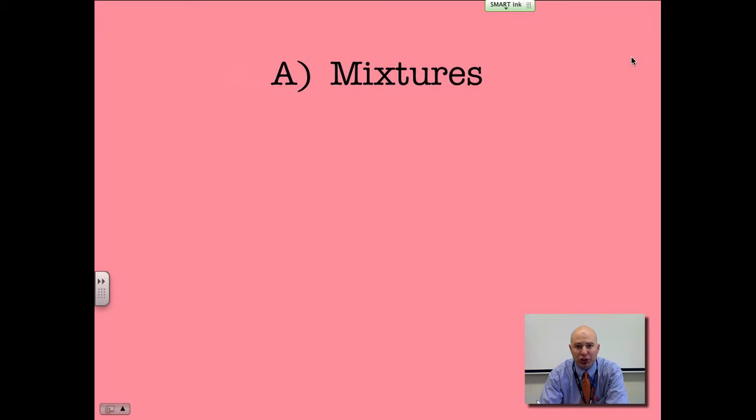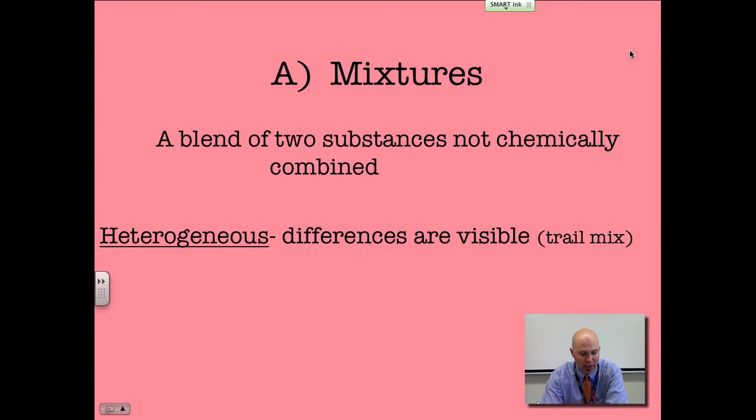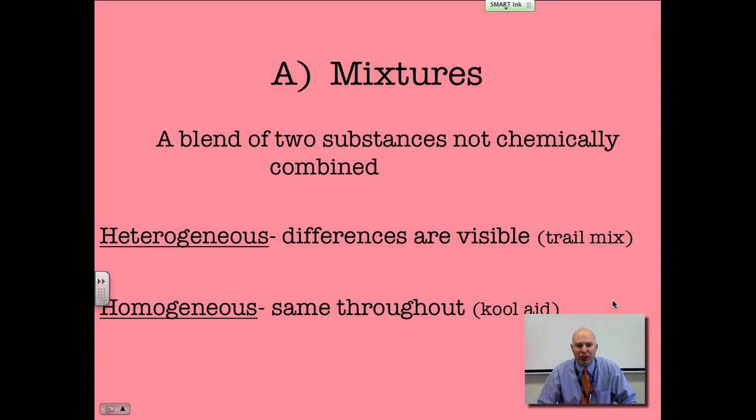So first of all, mixtures. We need to know what a mixture is. We have two substances not chemically combined. We're not chemically having a reaction going forward, but rather just a blend of substances. Now there are two types. We have heterogeneous mixtures, and these are differences that are visible. Trail mix, garden salad, or sand in water—it doesn't dissolve so it sinks to the bottom. Those are heterogeneous mixtures. They are not solutions. Solutions would be homogeneous mixtures—mixtures that are the same throughout. So Kool-Aid, where you've got the sugar and the coloring in the water, that's a homogeneous mixture. It is considered a solution.